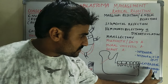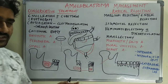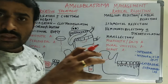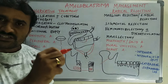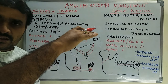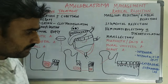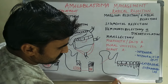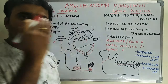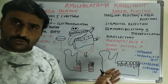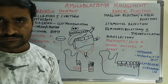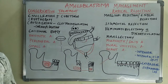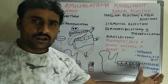The extraoral submandibular incision is taken in the submandibular region, 2 centimeters below and parallel to the lower border of the mandible. After elevation, you can remove the tumor and perform hemimandibulectomy by this submandibular incision as well. These are the three types of surgical approaches.